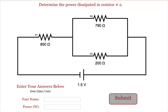This program is designed to make sure students can handle a combination series parallel circuit. It's asking them to find the power dissipated in resistor 2, which happens to be the 790 ohm resistor.